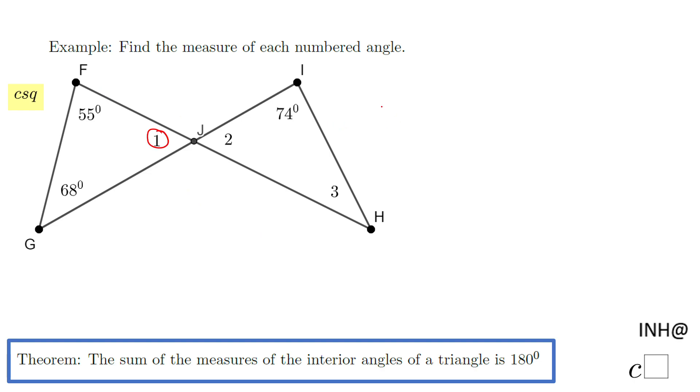angle 1 is in triangle JFG, and in that triangle we know two angles: this is 55 degrees, this is 68 degrees. We can find angle 1. I'm going to use the theorem I just mentioned and say: measure of angle 1 plus 55 plus 68, so the measure of these three angles, equals 180. So now I'm going